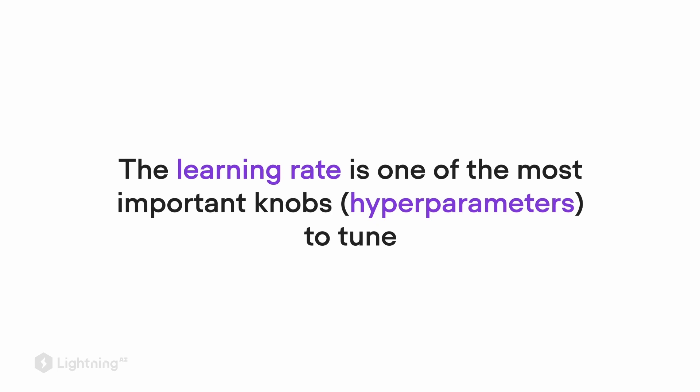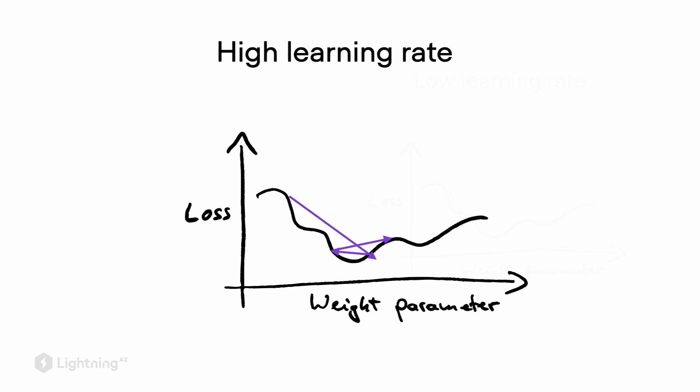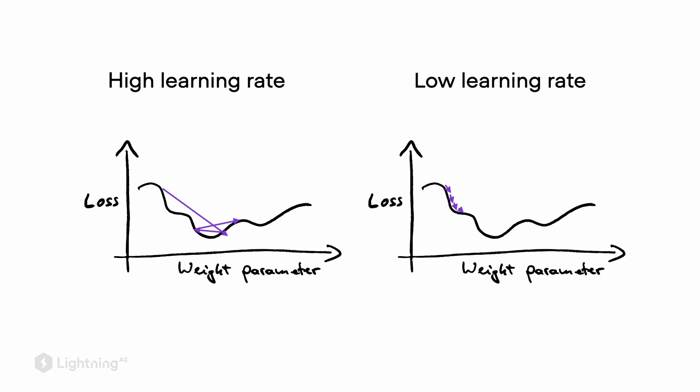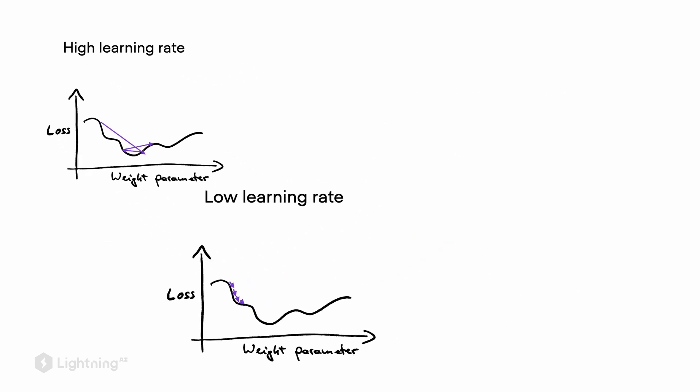As we mentioned in the previous video, the learning rate is one of the most important hyperparameters that we have to tune. If we have a learning rate that is too large, we may jump around erratically on the loss surface. If we have a learning rate that is too small, our learning may even get stuck. So ideally, we want to find a good learning rate.